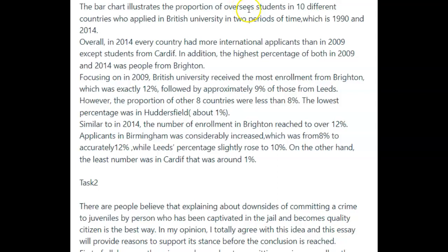There was also a spelling mistake here. Now, let's look at it again. 'The bar chart illustrates a proportion of overseas students from 10 different countries who applied to British universities in two periods of time, which are 1990 and 2014.' As you can see — one sentence, lots of mistakes.